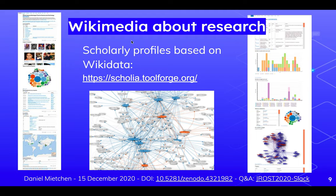Here is one of those more or less trivial examples, but it actually brings together content in an interesting fashion. Scolia is a tool that provides scholarly profiles based on Wikidata — structured, linked, open data — and combines that with information from Wikipedia and media from Wikimedia Commons to create profiles of people, organizations, topics, events, publications, and so on. This runs on the Wikimedia cloud infrastructure.